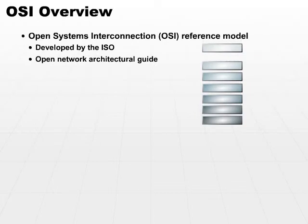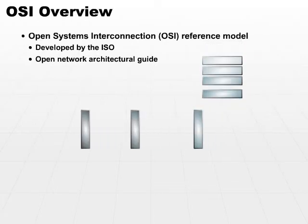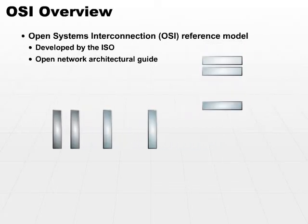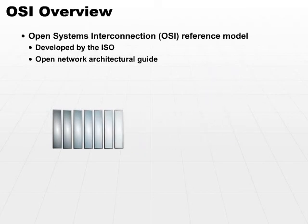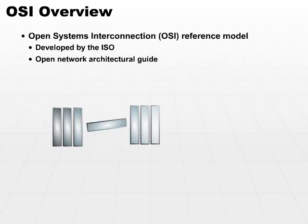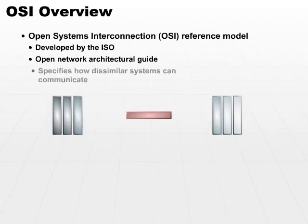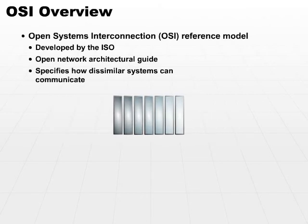It's a guide that tells protocol developers how to develop the rules so that your machine and your layer of software can easily communicate with another standard layer of software on the other side, on the target machine. It specifies just how dissimilar systems can communicate.